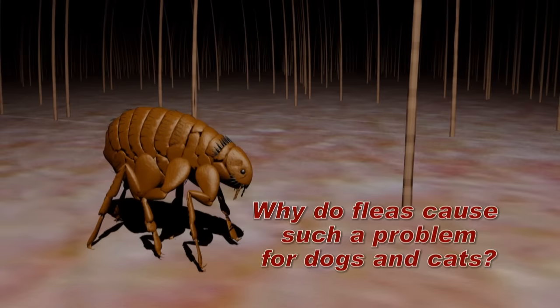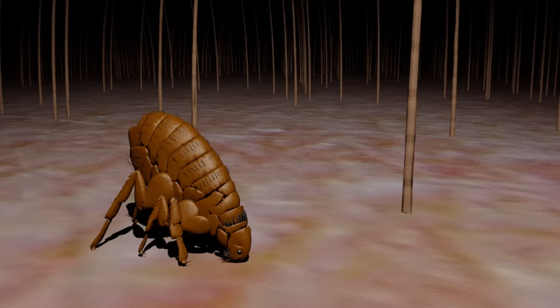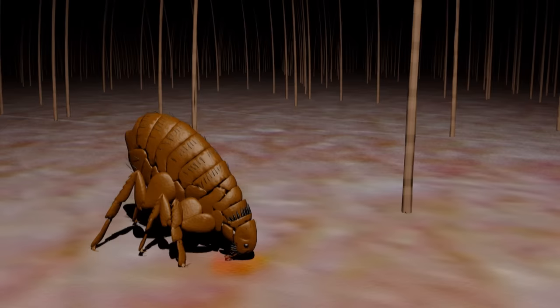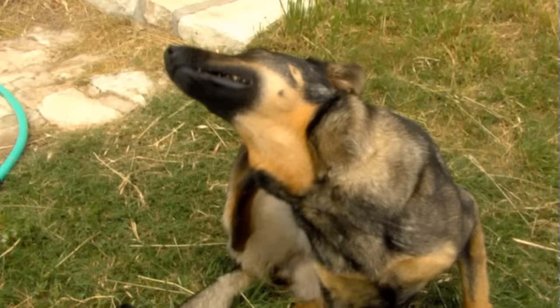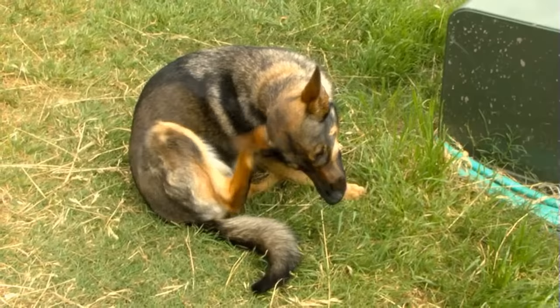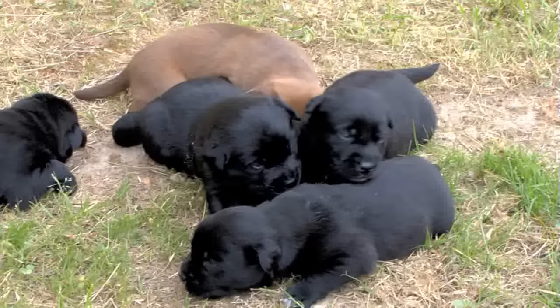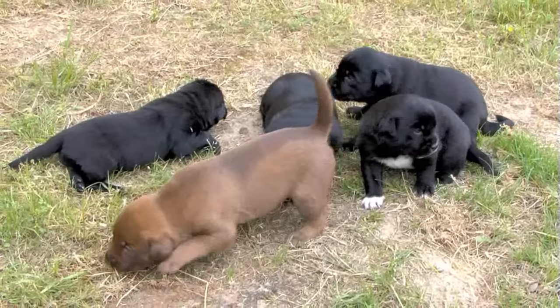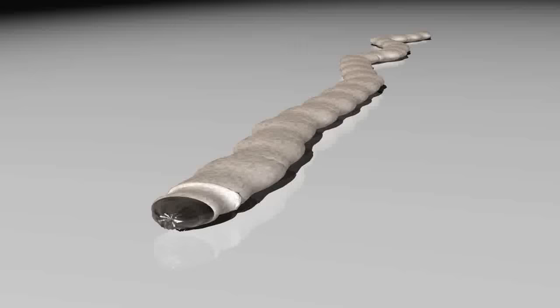Why do fleas cause such a problem for dogs and cats? Like many other parasitic insects, fleas tend to leave behind small quantities of saliva during the feeding process. The saliva is often very irritating to the host animal and creates both a local and systemic allergic reaction. This allergic reaction can leave a sensitive dog or cat feeling miserably itchy. This itch, if not controlled, may cause the dog or cat to chew or scratch at large portions of their hair coat, and when a pet shows these reactions to flea bites, they are categorized with a flea allergy. Fleas pose a second hazard in that they can substantially deplete the blood supply on a small pet, leading to a life-threatening anemia.